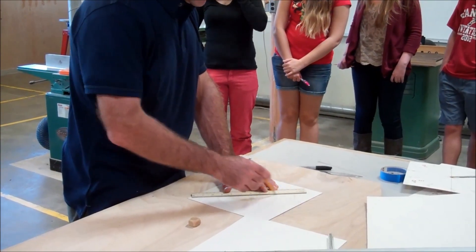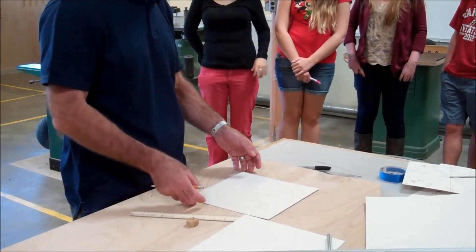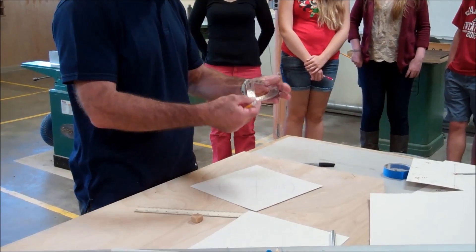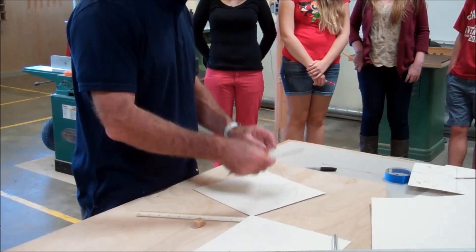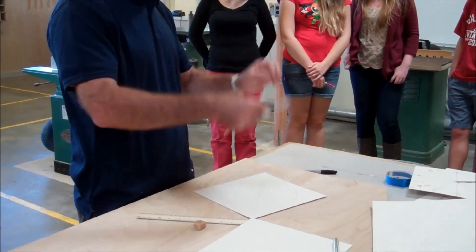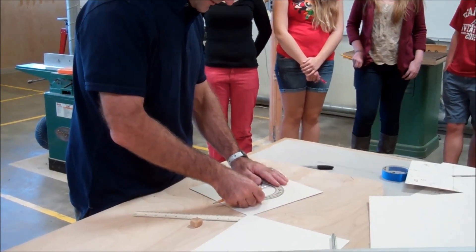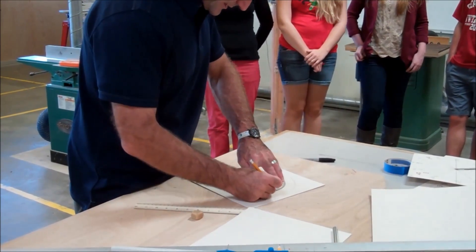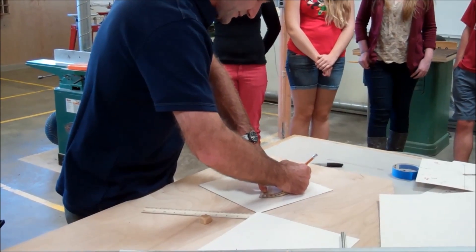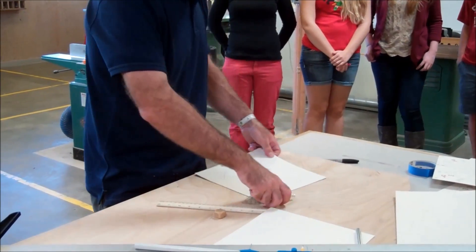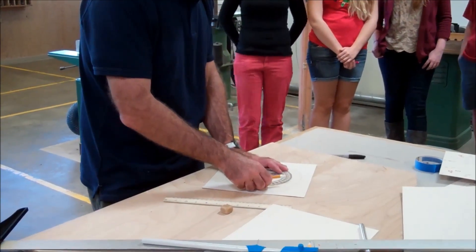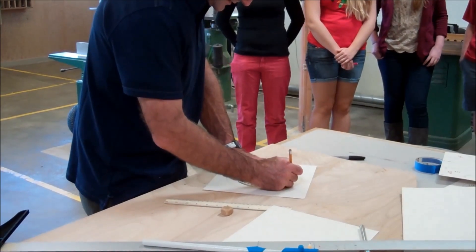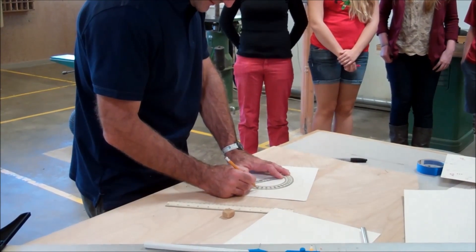Then I'm going to measure up 45 degrees using my protractor here, setting it right on that line. I'll find 45, mark it, 45 in my second quadrant, find my 45s here, and here.